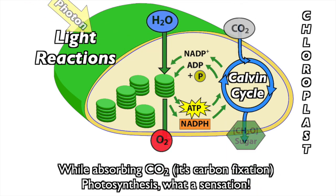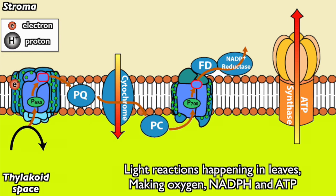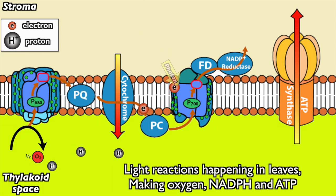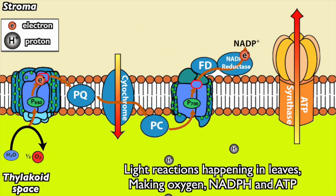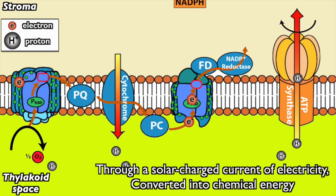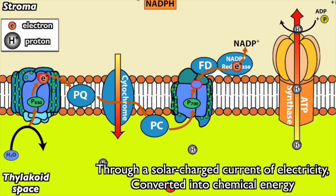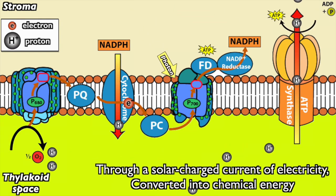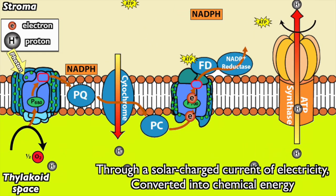What a sensation. Light reactions happening in leaves, making oxygen, NADPH and ATP through a solar charge current — electricity converted into chemical energy.